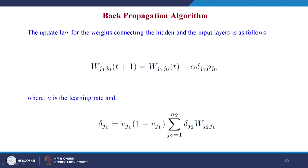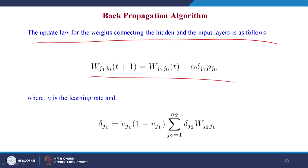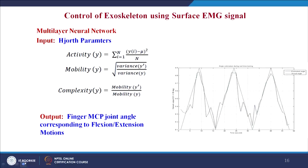Once the weights connecting the hidden to the output layer are updated, we update the weights connecting the hidden to the input layers. This is given by: W(J1,J0)(t+1) = W(J1,J0)(t) + α × delta(J1) × P(J0), where the propagating error delta(J1) = V(J1) × (1 − V(J1)) × summation over J2 from 1 to N2 of [delta(J2) × W(J2,J1)]. The system is now trained with the Hjorth parameters and RMS value as input, and the finger MCP joint angle as output for flexion-extension motions.